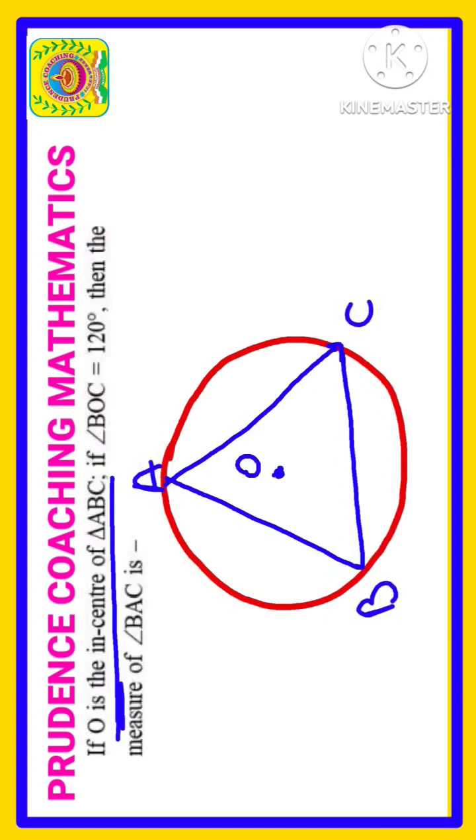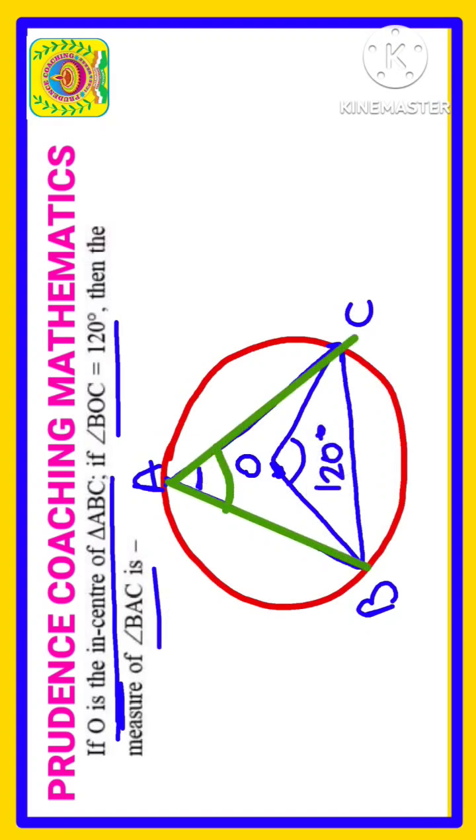Triangle is ABC. Now it is said that if BOC - let us write this is B, this is O, and this is C - that means this angle is given to be 120 degrees. Then find the measure of BAC. You are asked to find out this particular angle.